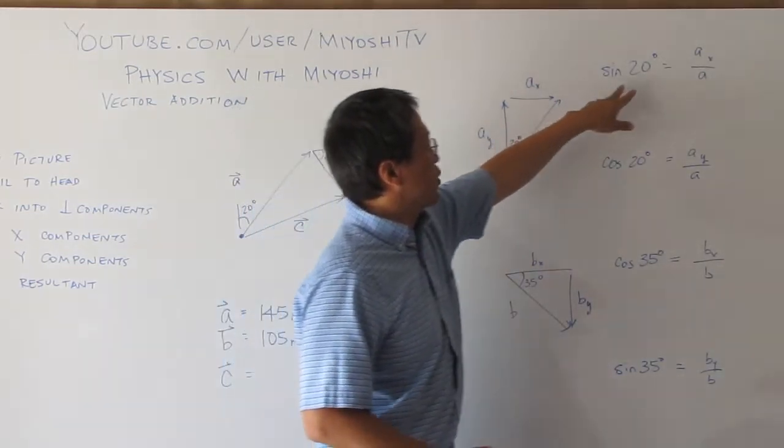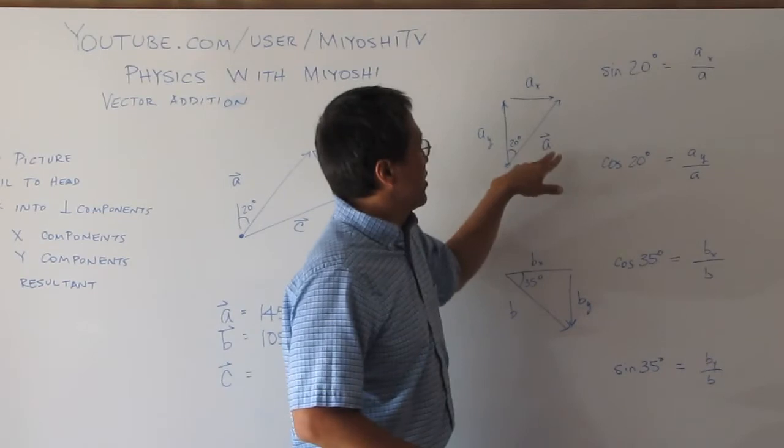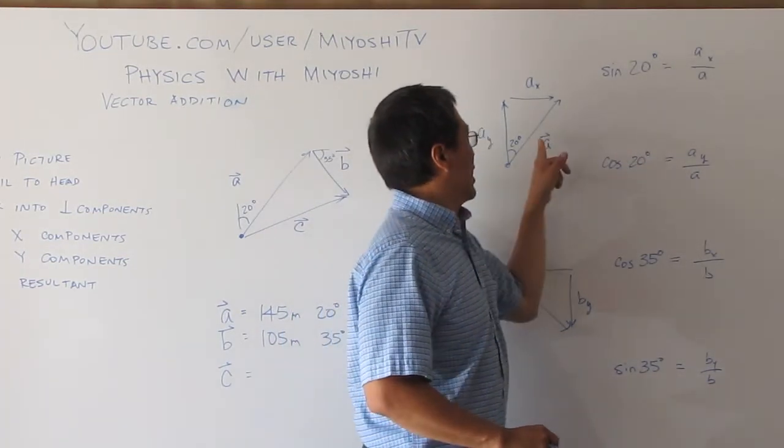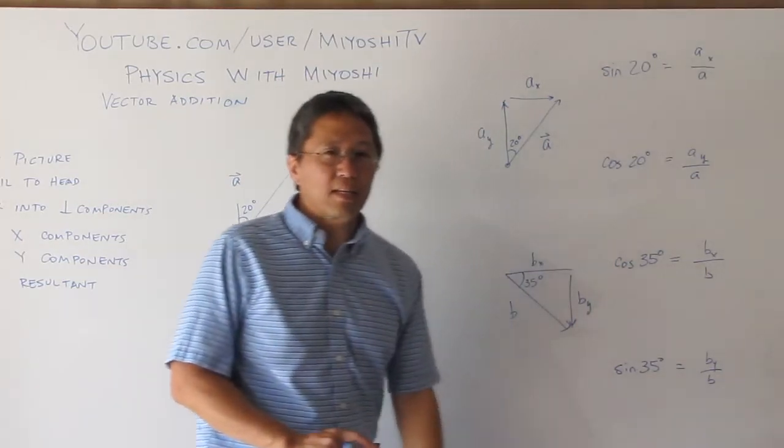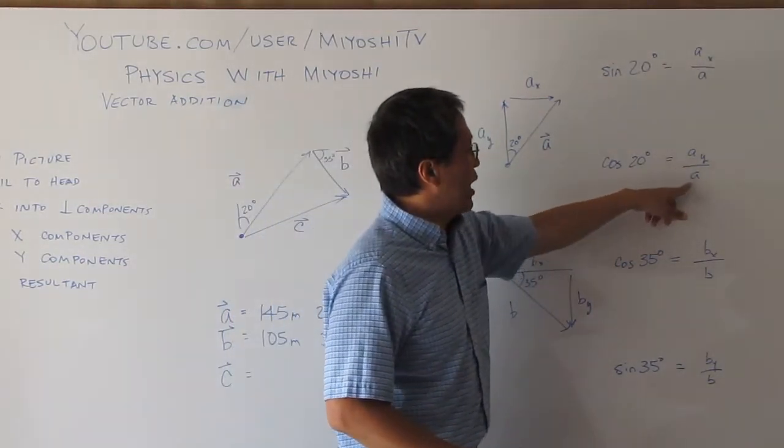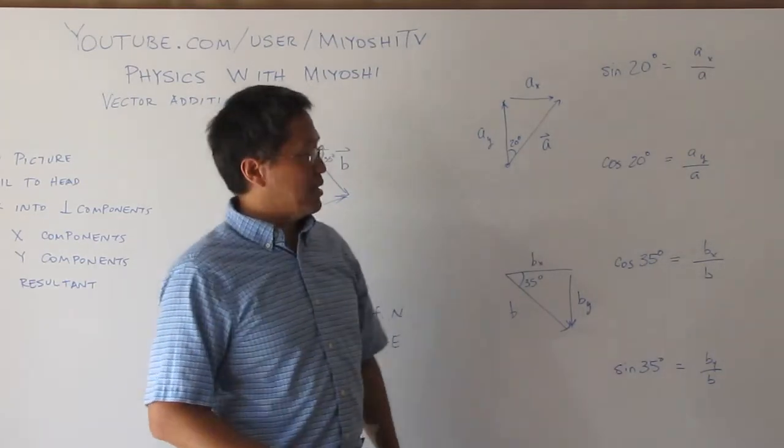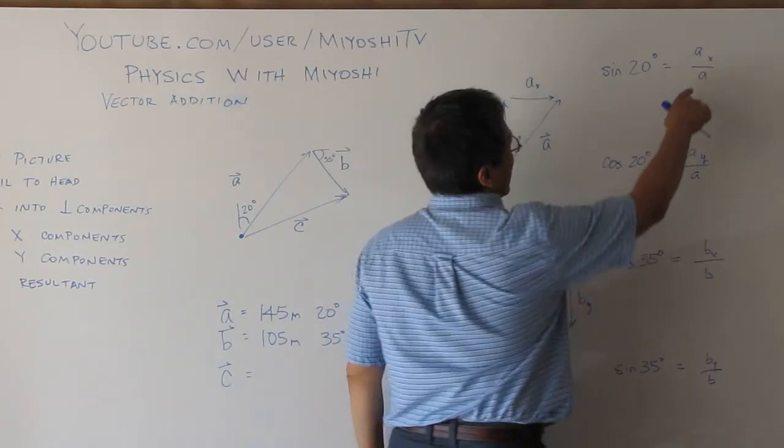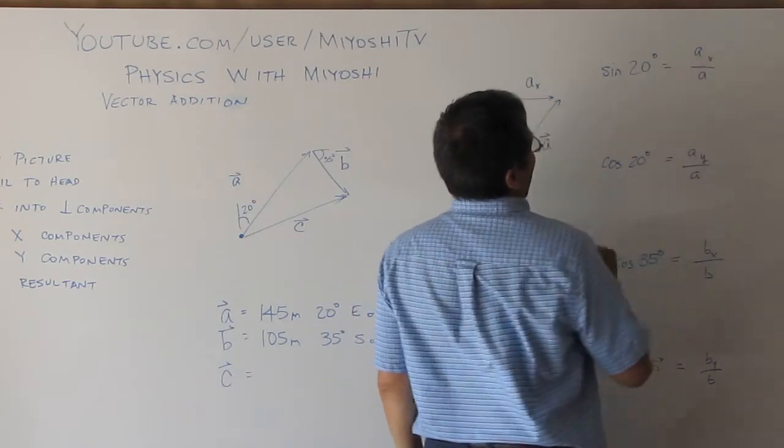So in this case, I have the sine of 20 is ax over a, which in this case, when I see there's no line over the top, that means it's the magnitude only. And I have the cosine of 20 is ay over the magnitude of a. So if I want to find ax, I would rearrange this equation and I find out that ax is a times the sine of 20 degrees.